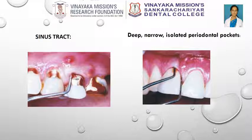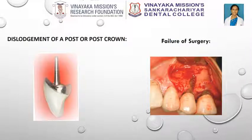A common feature of vertically root fractured teeth is the development of deep, narrow, isolated periodontal pockets. Deep probing in one position around the circumference of the tooth in the presence of otherwise normal attachment usually indicates that the tooth is fractured. Deep probing in two positions on opposite sides of the tooth is almost pathognomonic for the presence of a fracture. A root fracture should be suspected if an apparently well-fitting post or post-core becomes dislodged. Because of problems with diagnosis, it is not uncommon for teeth with vertical root fractures to have been treated repeatedly by surgery before the presence of a fracture is suspected. When surgery fails for no obvious reason, a vertical root fracture should be considered before the periapical area is re-entered surgically.